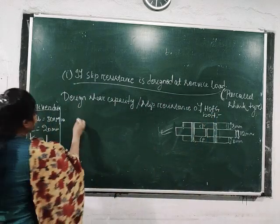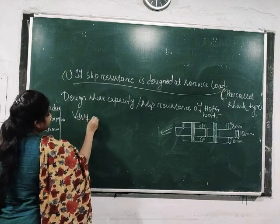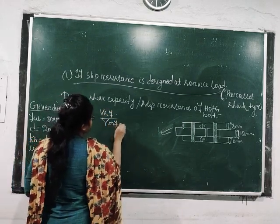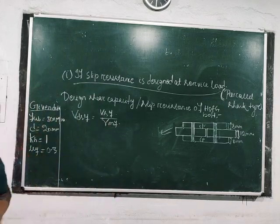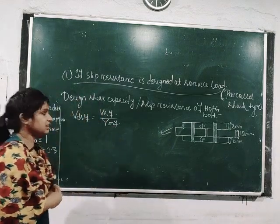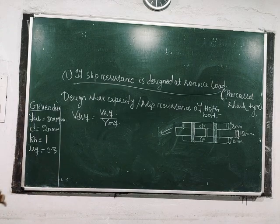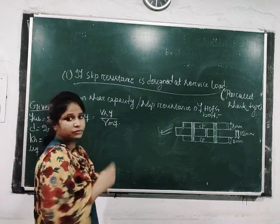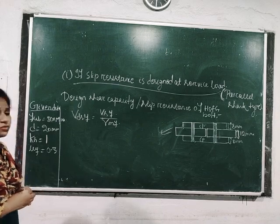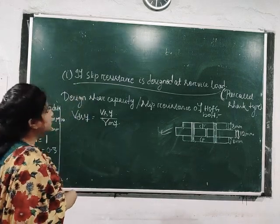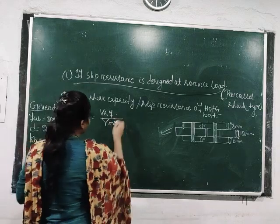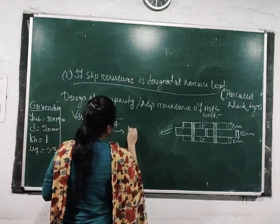The design shear capacity of the HSFG bolt is denoted by VDSF, which is calculated as the nominal shear capacity of the HSFG bolt divided by γmf. The value of γmf is 1.1 when the slip resistance is designed at service load, and 1.25 when designed at ultimate load. Since the condition here is slip resistance designed at service load, γmf = 1.1.